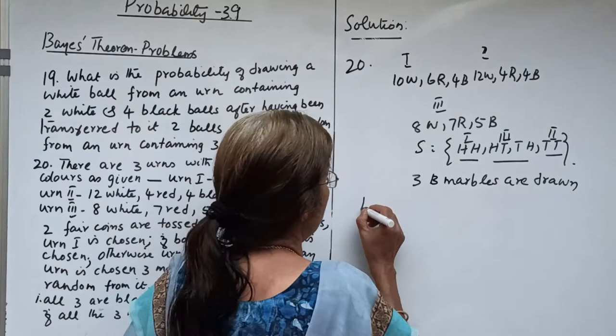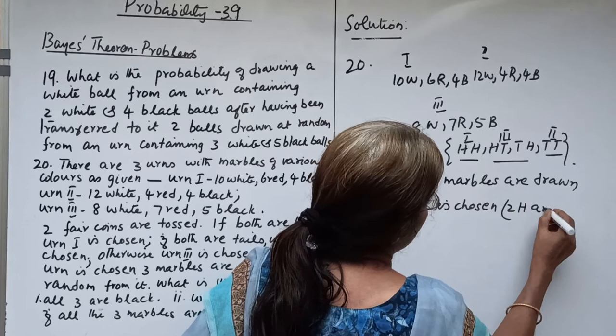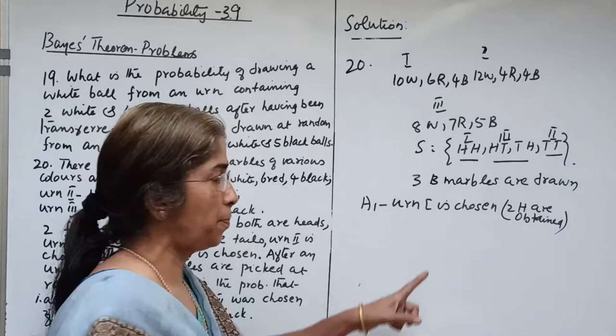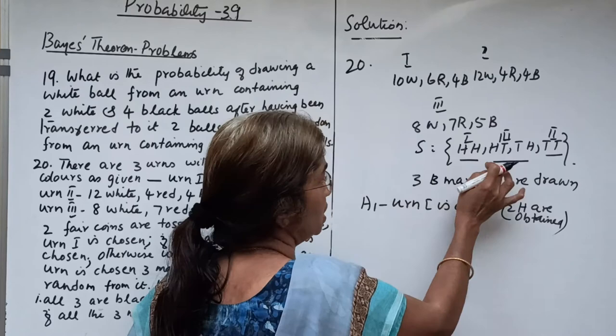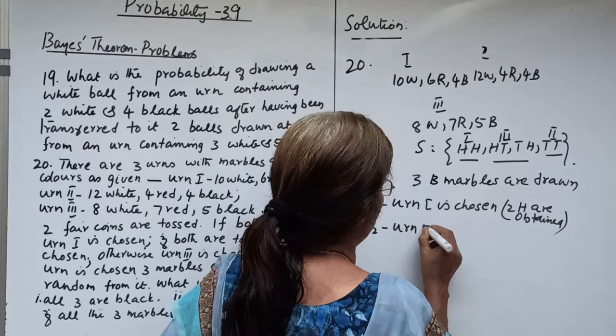The events are: A1 is urn 1 is chosen (2 heads obtained), A2 is urn 2 is chosen (2 tails obtained), and A3 is urn 3 is chosen (HT or TH). So P(A1) equals P(HH) equals 1 by 4; P(A2) equals P(TT) equals 1 by 4; P(A3) equals P(HT or TH) equals 2 by 4.